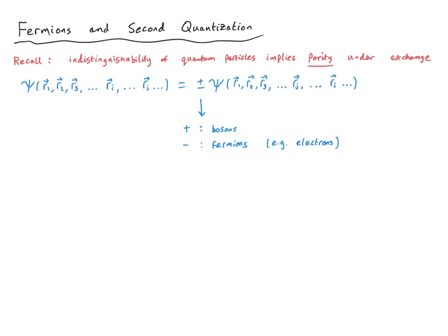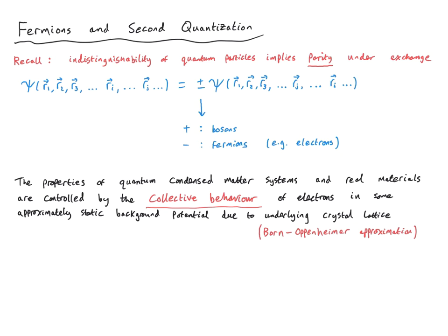We call quantum particles that are symmetric under particle exchange bosons, and we call quantum particles that are anti-symmetric with respect to particle exchange fermions. Specifically, electrons are fermions, and they're the particles that we're going to be concentrating on in this lecture course. Many important properties of a physical system depend on the exchange statistics of their constituent particles. A simple example that we saw many times in the first part of the course is the exchange interaction between a pair of spins. This spin-spin interaction, of course, has its origin in the exchange statistics of the underlying fermions.